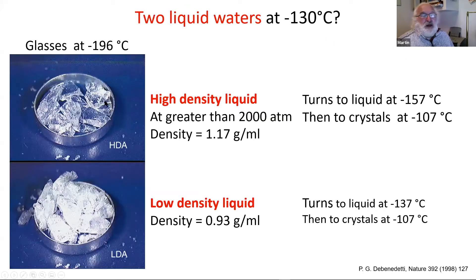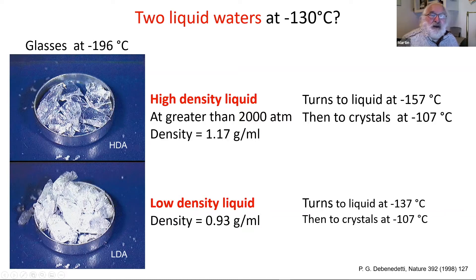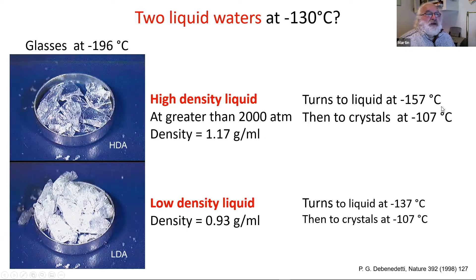Here is a picture of the two liquid waters. We formed glasses so we could photograph them. You have to take them down even colder and they do form a glass. But as you warm these glasses up, they form liquids at very low temperatures. So both the high density liquid and the low density liquid are possible.